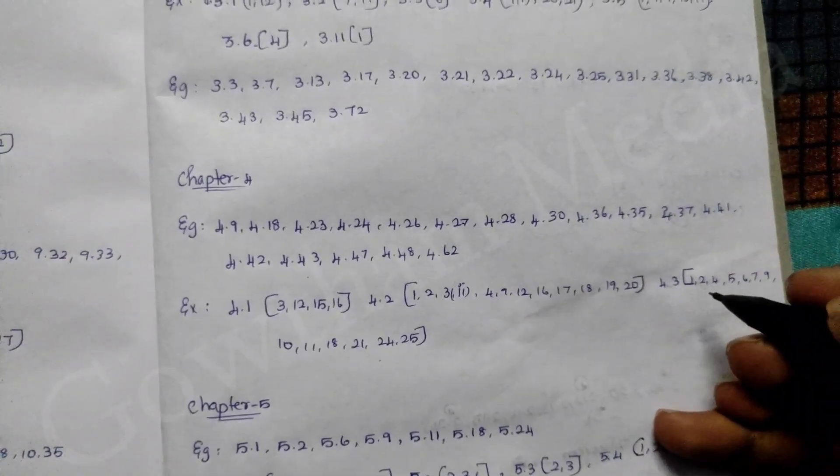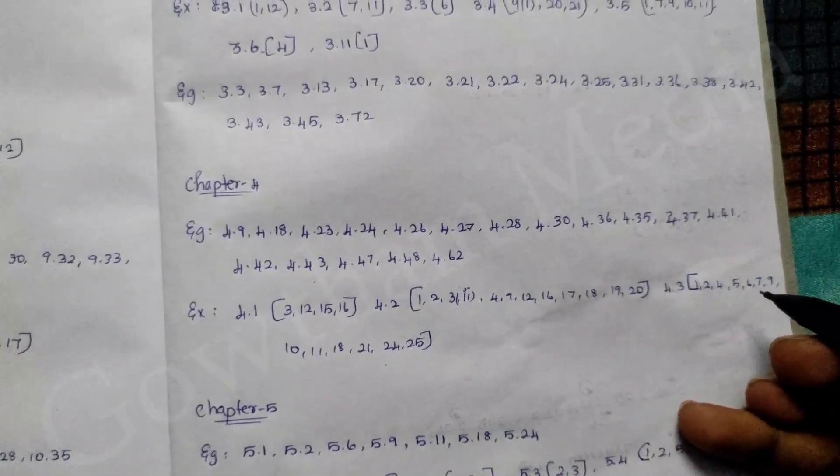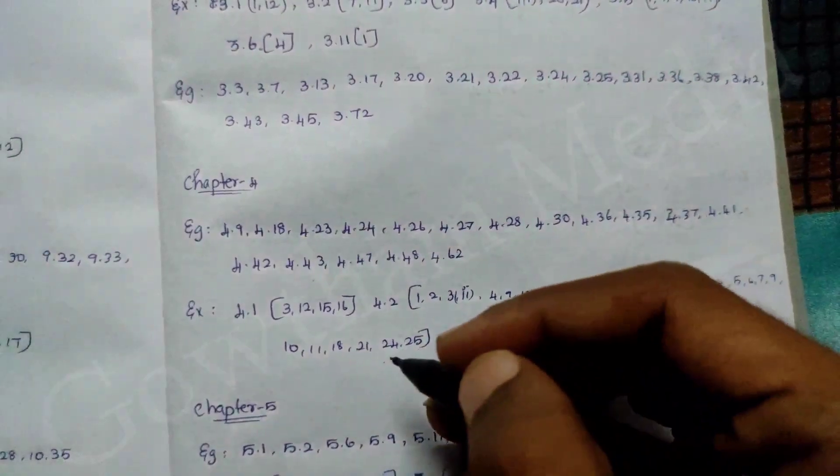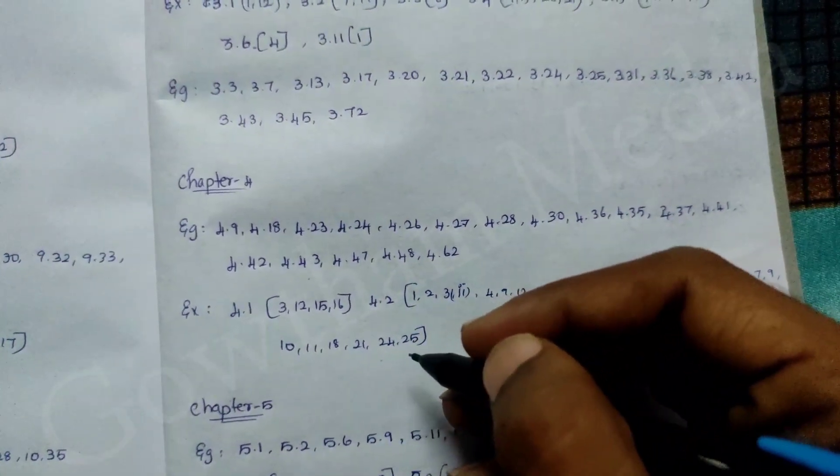4.3 — 1st, 2nd, 4th, 5th, 6th, 7th, 9th, 10th, 11th, 18th, 21st, 24th, 25th.